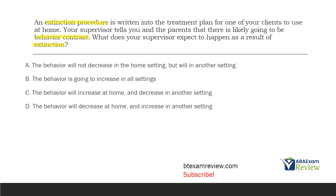If our supervisor thinks the behavior is going to decrease at home due to extinction and that there will be behavior contrast, what does the supervisor think is going to happen? To know this, you have to understand what behavior contrast is — this is part of your vocabulary and you must be fluent. Behavior contrast occurs when a behavior in one setting is either reduced or increased and it goes the opposite way in a different setting due to the change in reinforcement in one setting. Essentially, if we decrease the behavior in one setting, there's a good chance it's going to increase in another.